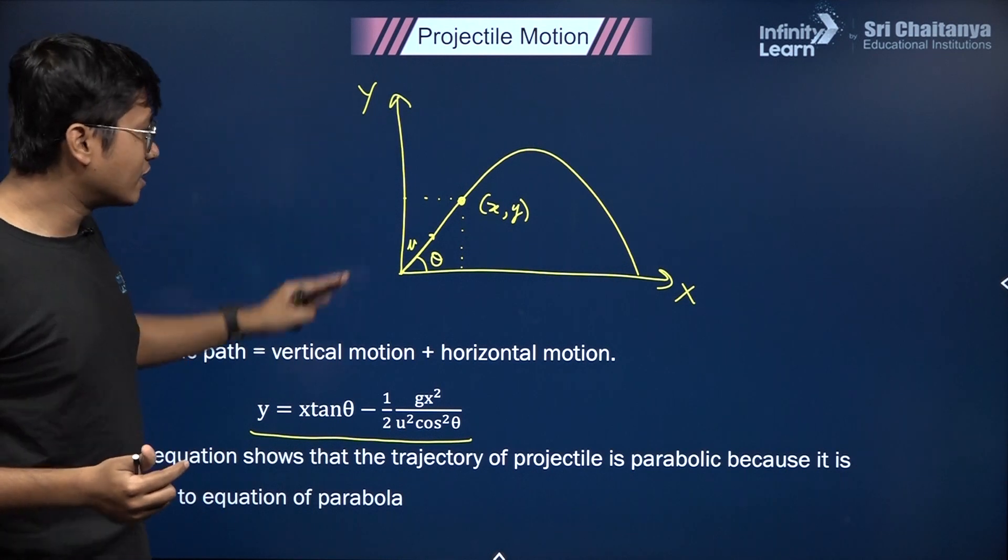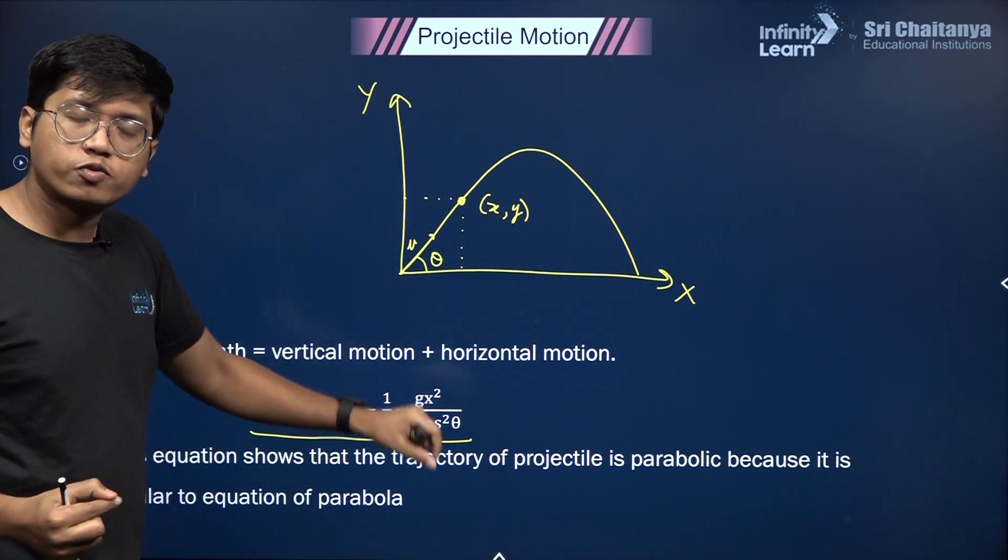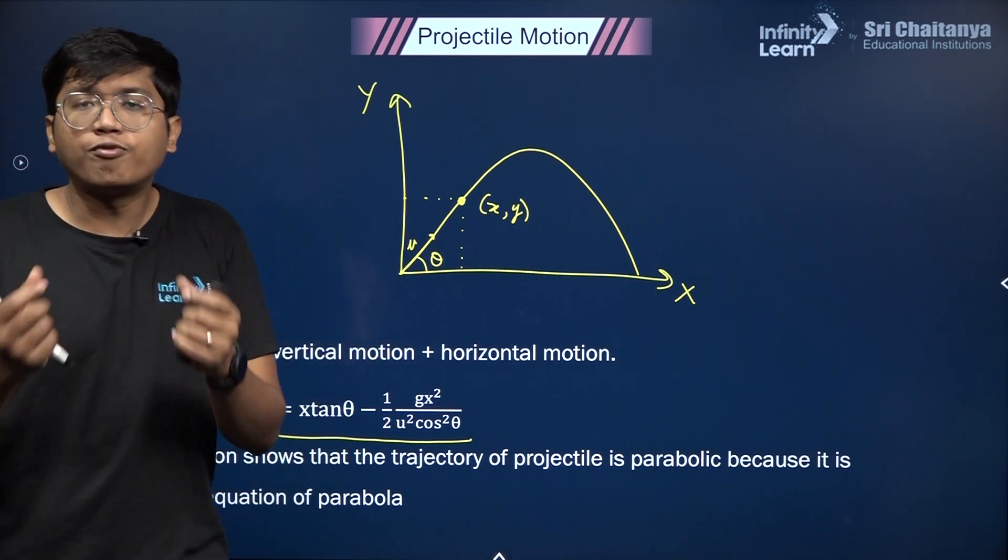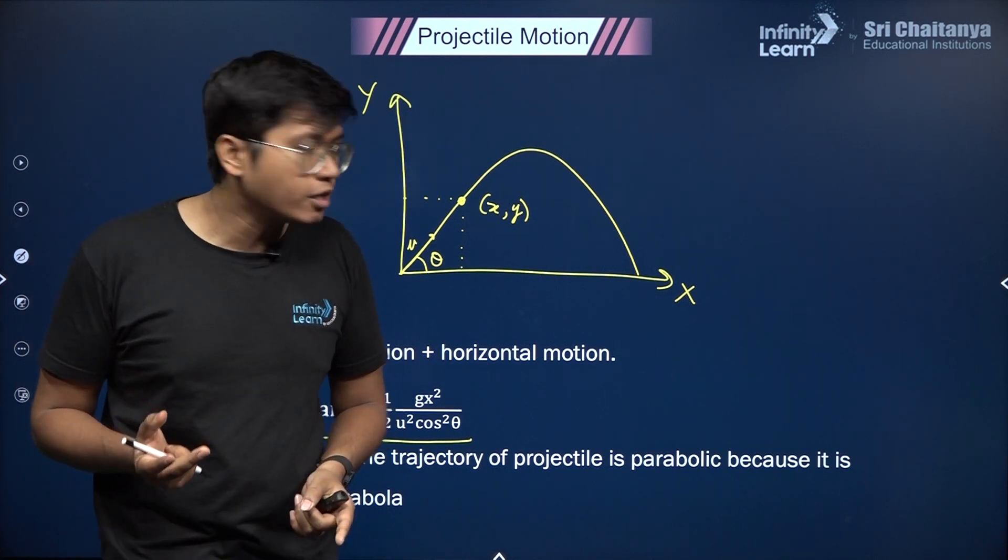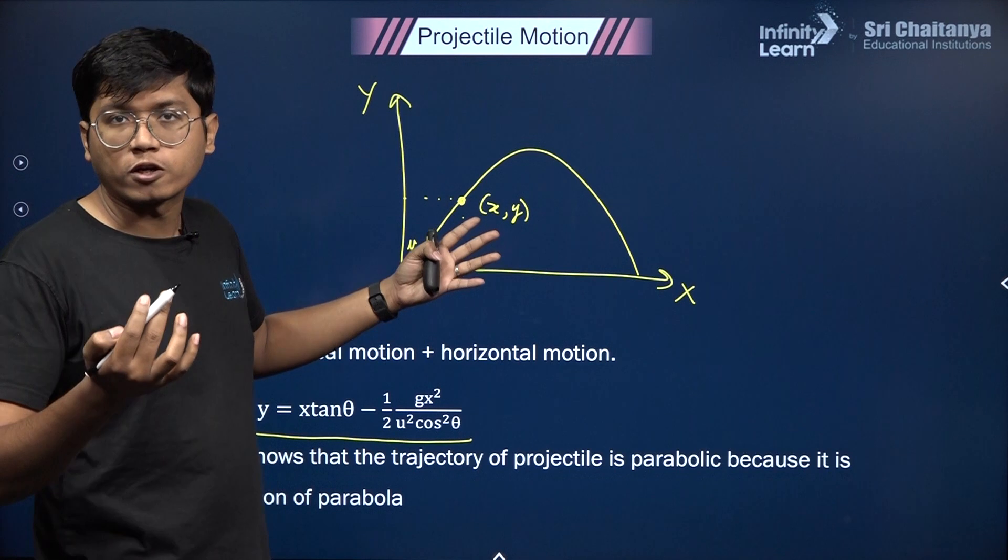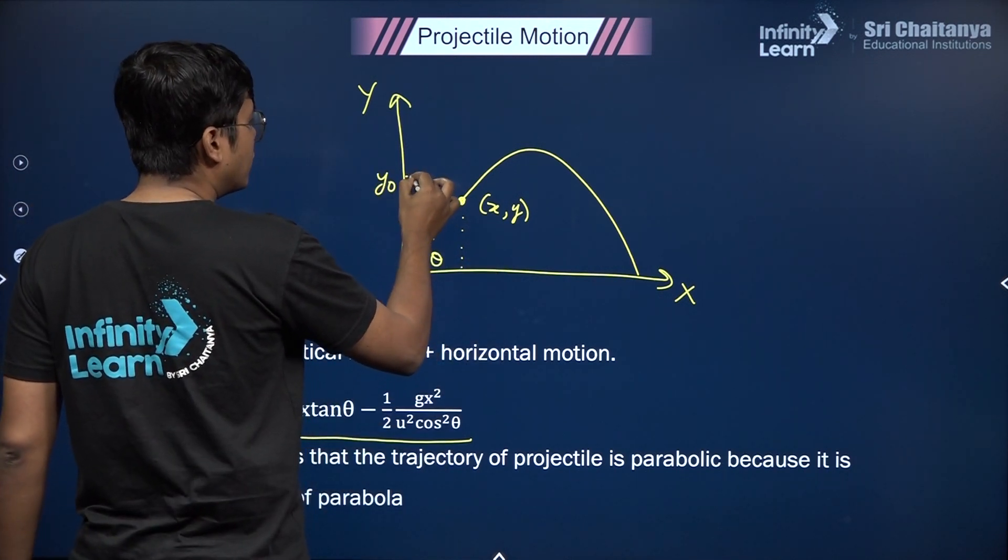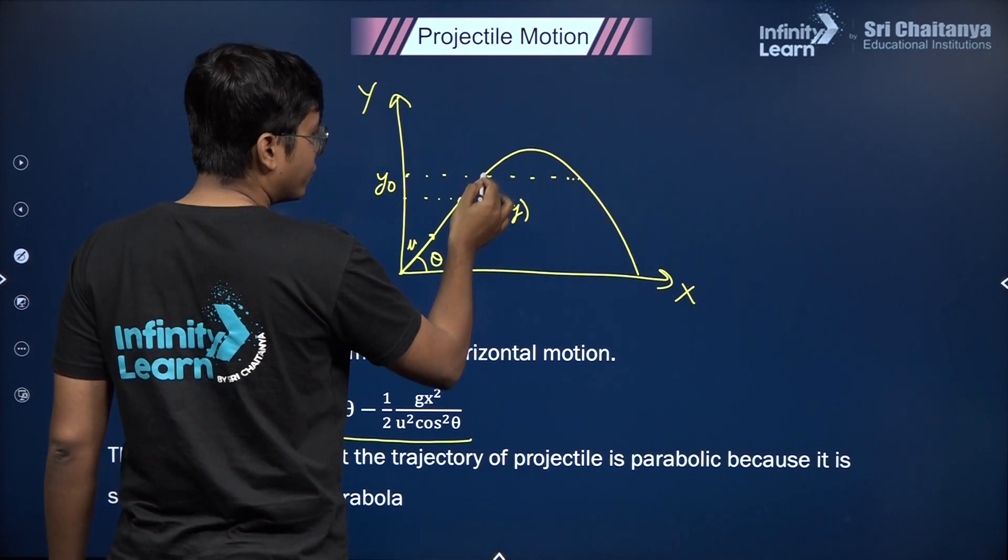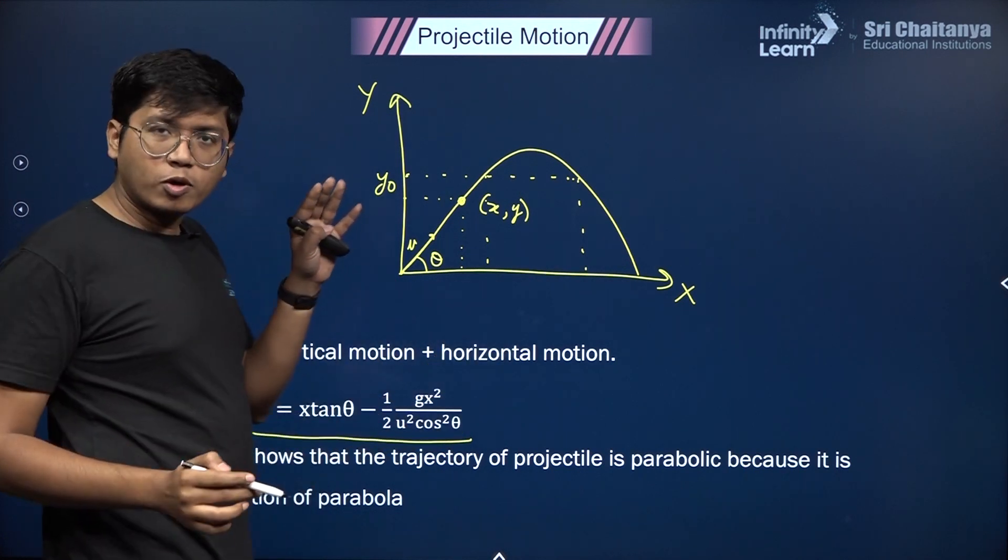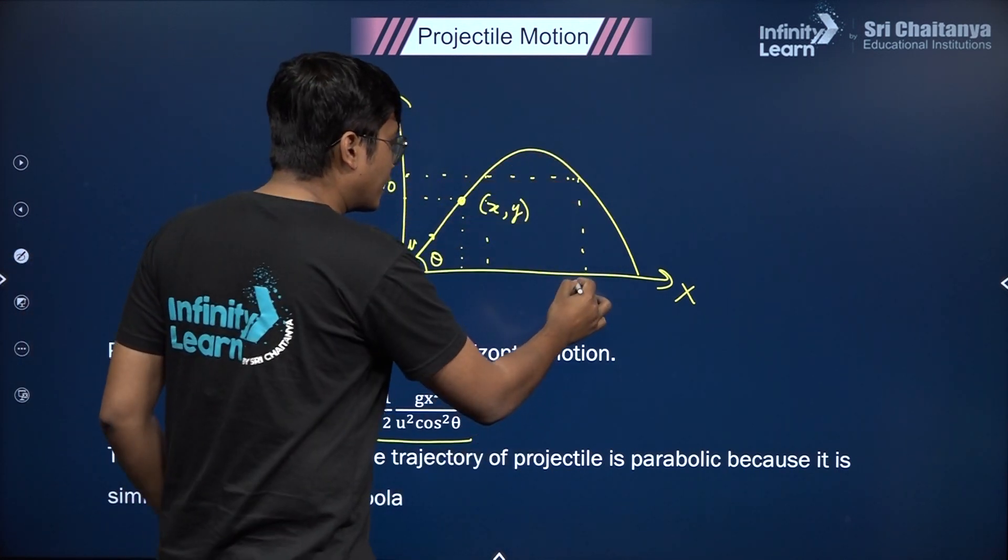That is the equation of trajectory. Why is this equation useful? Because you might be given questions where they tell you what is the position or how far has the projectile traveled when it is at a height given by a certain value of y₀. If you know the value of y₀, you can get x₀.